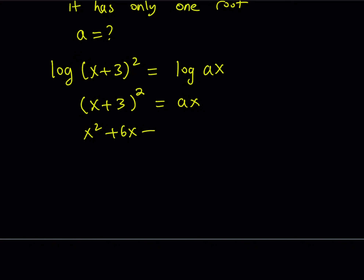If you expand it: x squared plus 6x plus 9, and then let's arrange everything. I'll write it with the negative b form — since when we write the quadratic formula we have a negative b, it's always good to have a negative sign in front of the b. So we get x squared minus (a minus 6)x plus 9 equals 0.